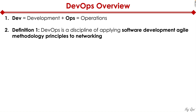Let me take a step back and give you the official definition of DevOps. It's a discipline of applying software development agile methodology principles to networking. For those of us that are familiar with agile type project management approach, agile methodology is basically doing projects in sprints at a very rapid pace. Sprints are basically the amount of time that each sprint might be made up of.